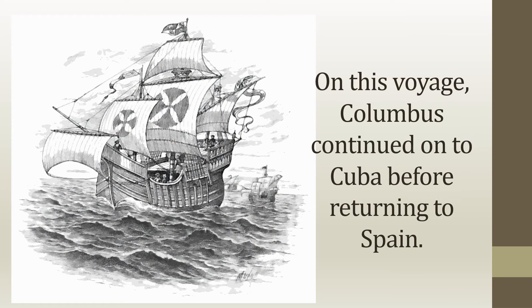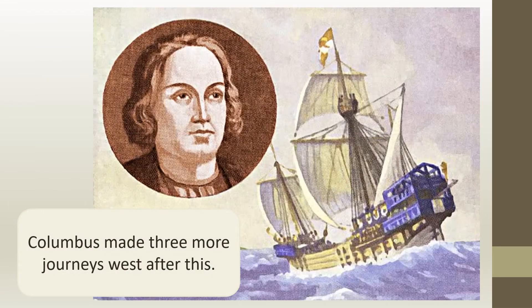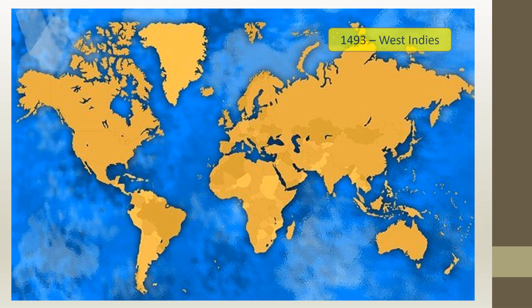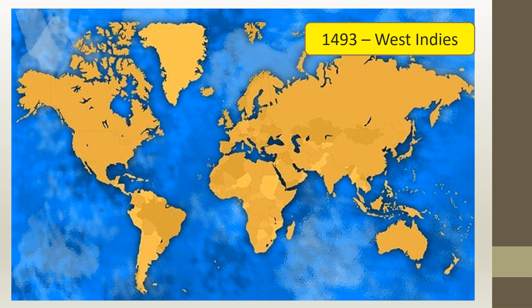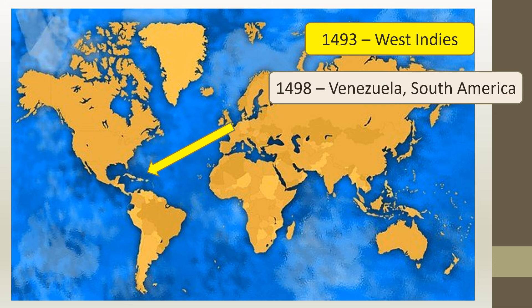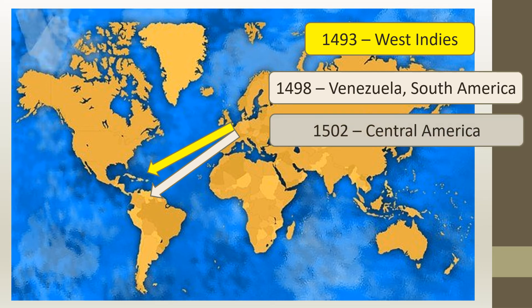On this voyage Columbus continued on to Cuba before returning to Spain. Columbus made three more journeys west after this. In 1493 Columbus returned to explore more of the West Indies. On his third voyage in 1498 Columbus travelled to Venezuela in South America, and on his final voyage in 1502 Columbus travelled to Central America.